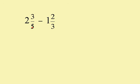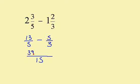2 times 5 is 10; add that to the 3 gives me 13, so that one is 13 over 5. 1 times 3 is 3; add that to the 2 gives me 5, so this one is 5 over 3, and I'm subtracting. The lowest common denominator is 15. 5 into 15 goes 3; 3 times 13 is 39. 3 into 15 goes 5; 5 times 5 is 25. 39 take away 25 is 14, so my answer is 14 over 15.